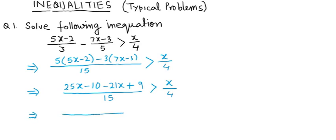after simplification, we will have (4x - 1)/15 is greater than x/4.